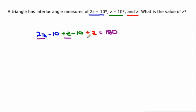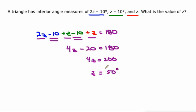So we can combine like terms. 2z plus z plus z is 4z. Then I see negative 10 and negative 10, that makes negative 20. We'll add 20 to both sides and divide both sides by 4, and we get that z is 50 degrees.